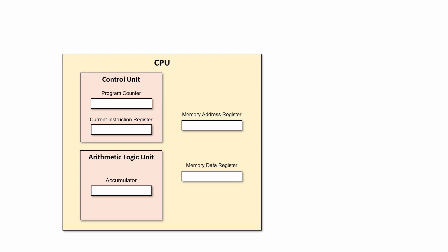This is of course a greatly simplified, abstract model. For example, this particular CPU has only a single core, but dual-core and quad-core CPUs are very common these days. We're also ignoring a lot of other components, including various other registers and the different levels of CPU cache.